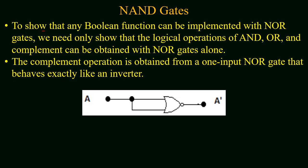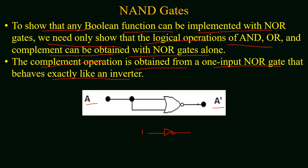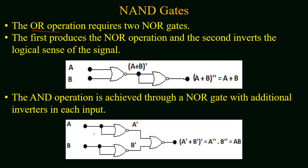To show that any Boolean function can be implemented with NOR gates, we need only to show that the logical operations of AND, OR, and complement can be obtained using NOR gates alone. The complement operation is obtained from a one-input NOR gate that behaves exactly like an inverter. Since a NOR gate requires a minimum of two inputs, we apply the same input to both terminals, giving (A + A)' = A'. This is the inverter operation obtained using a NOR gate.